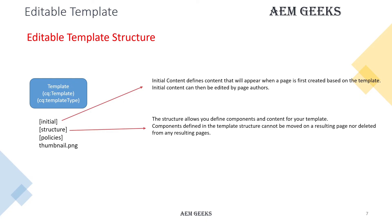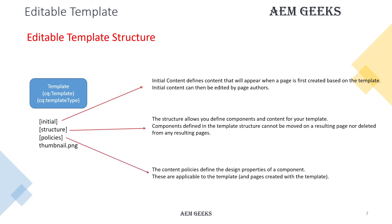Policies define what components are allowed to be added on a page. This is similar to the design node used in static templates. Using policies you can define which components are allowed along with other additional features. If you want to control what components are allowed in the above two sections, you add a policy and define the allowed components there. Thumbnail defines the image shown when selecting a template.